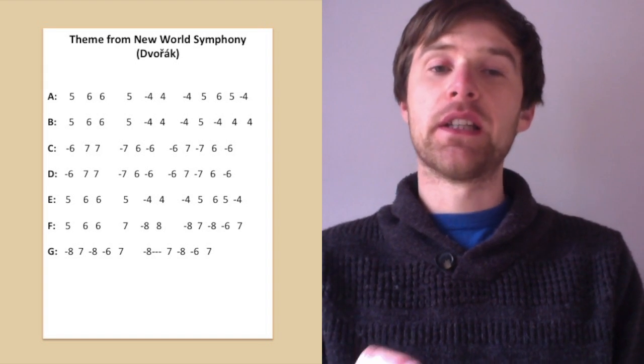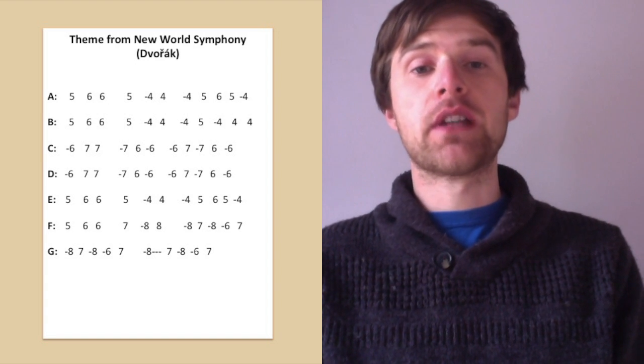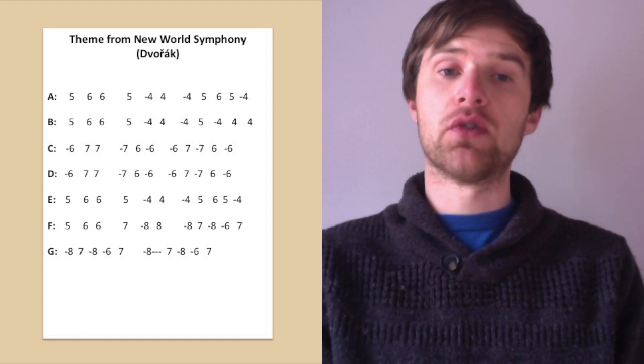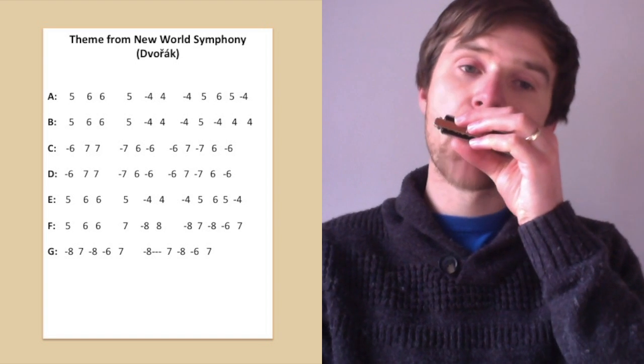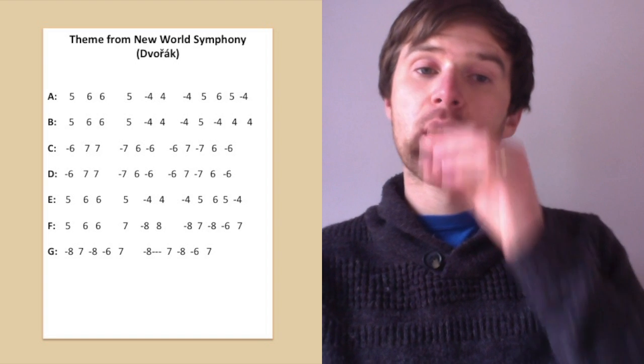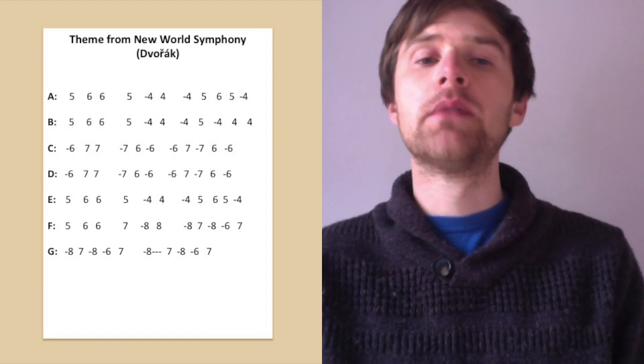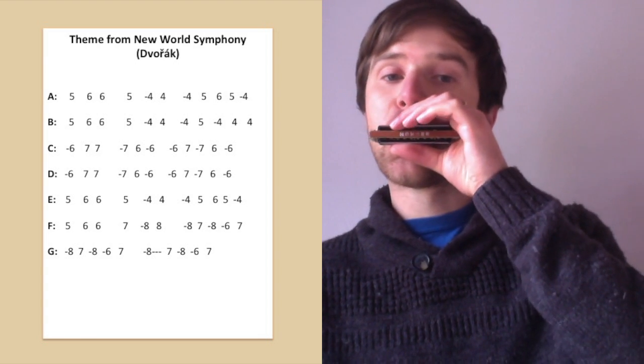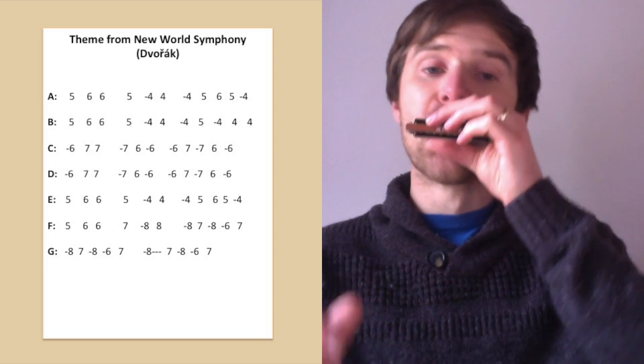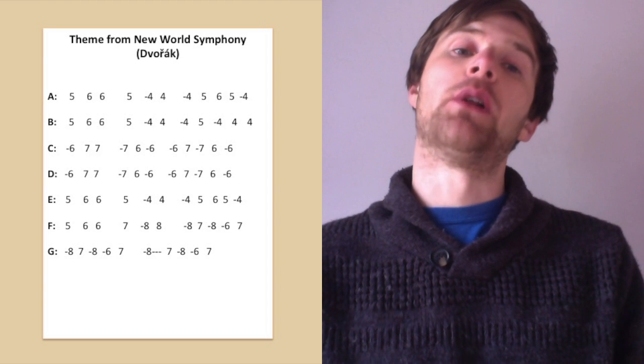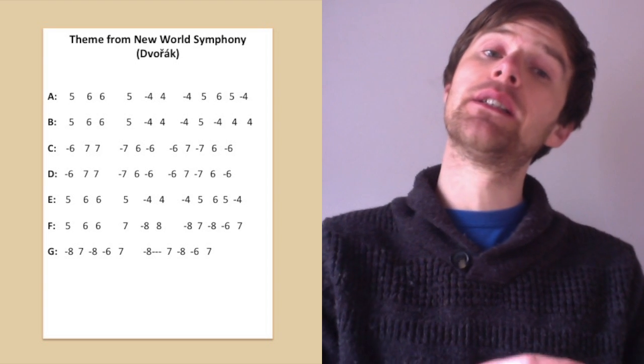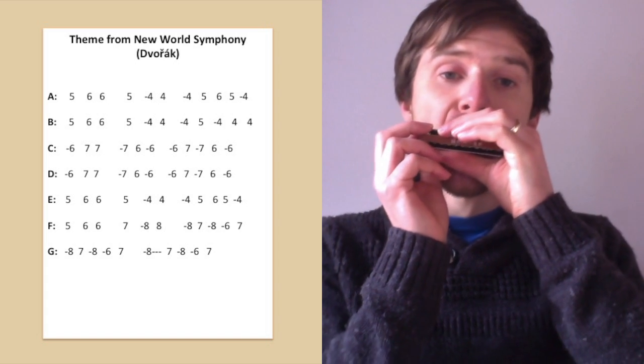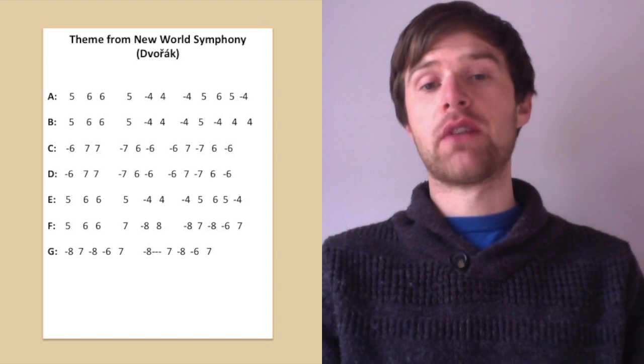So line C. [plays] Lovely little melody this. And it's six draw, seven blow, seven blow. And then seven draw, six blow, six blow, six draw, six draw, seven blow, seven draw, six blow, six draw. And again, I've sort of split this into three. So the first three notes. [plays] Six draw, six draw, six draw, seven blow, seven blow. [plays] And then seven draw, six blow, six draw. [plays]